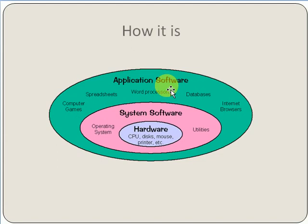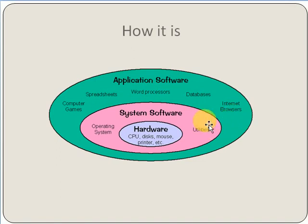Examples of application software include computer games, spreadsheets, word processors, databases, and internet browsers. System software includes operating systems, utilities, and system programs for a computer, managing hardware components such as CPUs, disk drives, mouse, printers, etc.